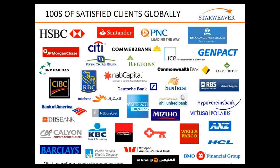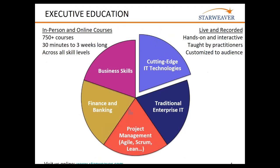We do this in live and online format and have pretty much done this on every continent in the world. We do programs that are hands-on and interactive, taught by practitioners like Nasser, and customized to the audience. Our core areas are five categories: cutting edge IT, enterprise IT, project management, finance and banking — those are the technical skills — underpinning derivatives and credit risk management, as well as business skills programs.